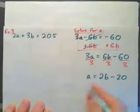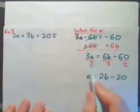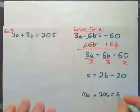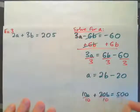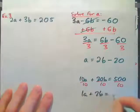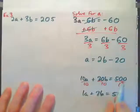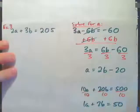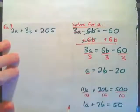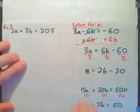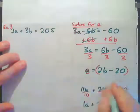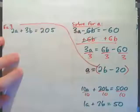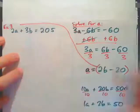When we divide, we can divide every term in an equation by the same number. For example, if 10 apples plus 20 bananas cost 500 cents, dividing by 10 gives 1 apple plus 2 bananas costs 50 cents. So we're left with a equals 2b minus 20, and now we substitute this expression in for a in the first equation.